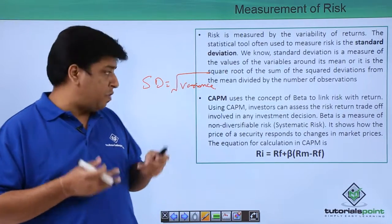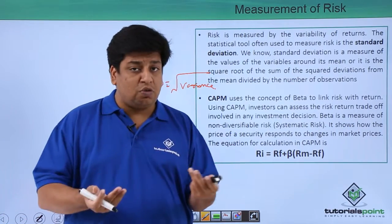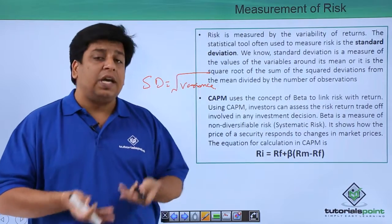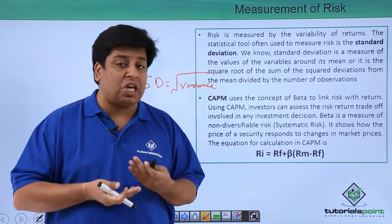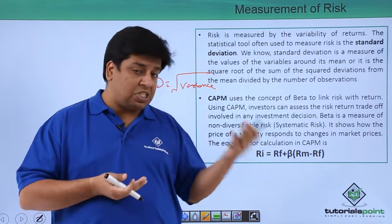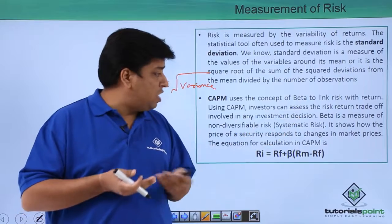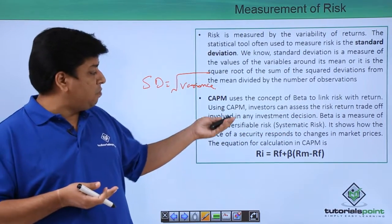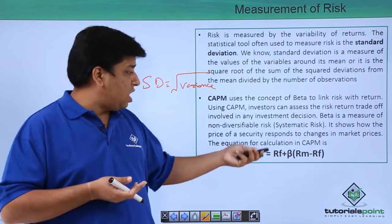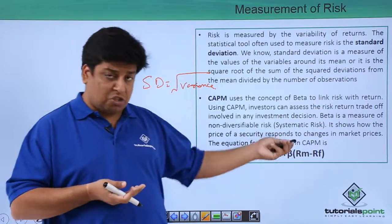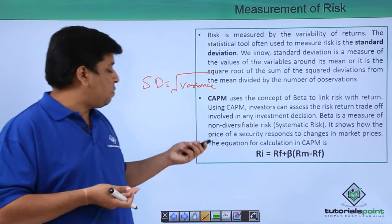The CAPM model is a very important concept used to calculate the expected rate of return. It also uses the concept of beta to represent risk, linking risk with return. Using CAPM, investors can assess the risk-return trade-off in any investment decision. Beta is the measure of non-diversifiable risk, which is systematic risk — it shows how the price of a security responds to changes in market prices.